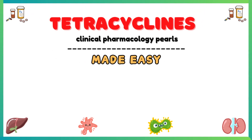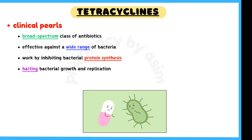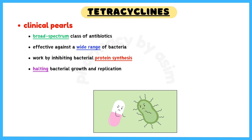Tetracyclines are a broad-spectrum class of antibiotics, effective against a wide range of bacteria, including both gram-positive and gram-negative organisms. They work by inhibiting bacterial protein synthesis, thereby halting bacterial growth and replication. In this video, we will discuss some important clinical pharmacology pearls about tetracyclines.